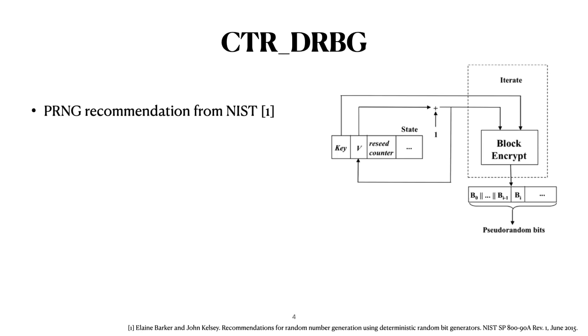NIST actually has an official recommendation for using counter mode to generate pseudorandom bits. During each request the plaintext gets incremented by the counter and the ciphertexts are collected until there are enough random bits. An important detail of this recommendation is that between every request the state which includes the key is updated. So this means that a DPA attack that wants to recover the state must succeed within a single request.